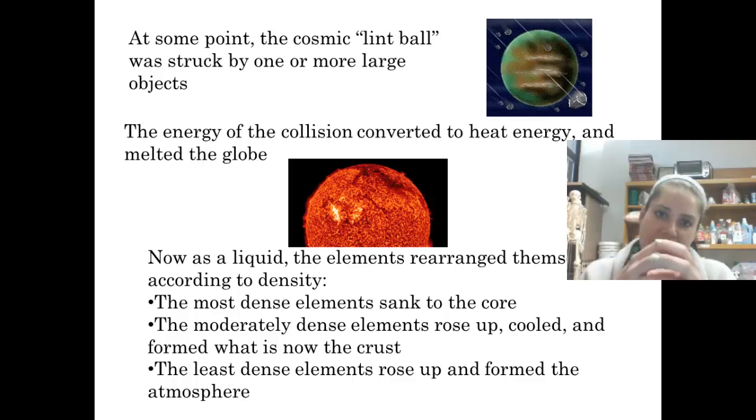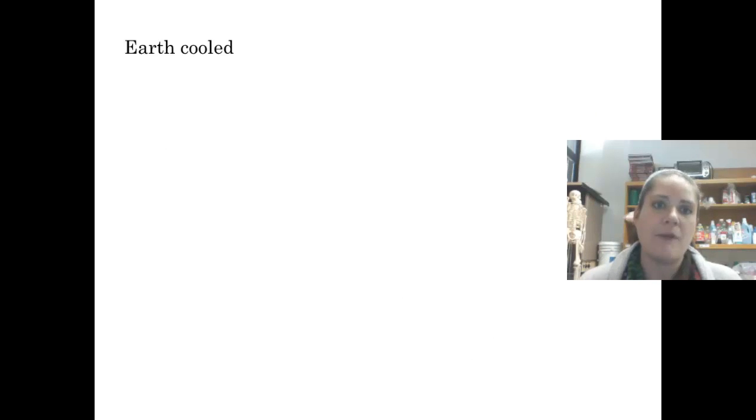So the things that were the most dense sank to the point where they were in the middle. The things that were moderately dense sort of rose up a little bit. They cooled and they formed what's now the crust of the Earth. And then the least dense things rose up the most, and they formed what we have as our atmosphere now. As time went by, because of course that collision happened and then didn't happen again, Earth started to cool.